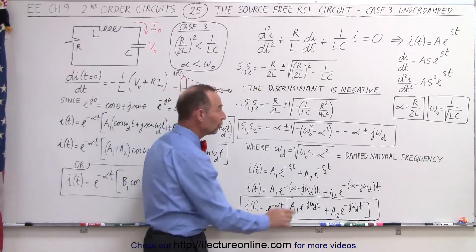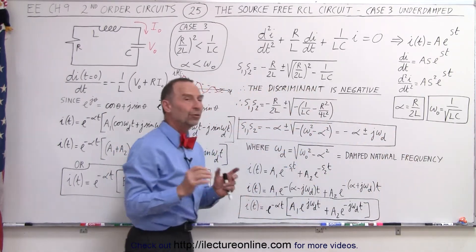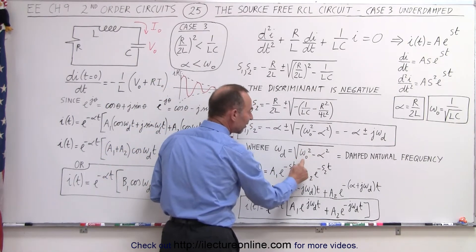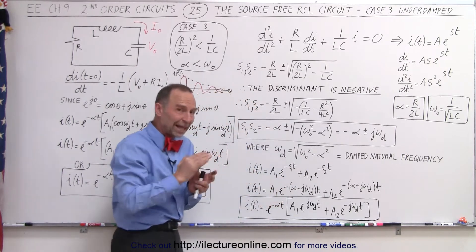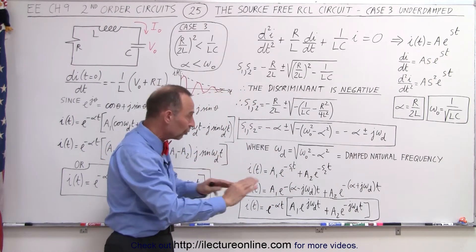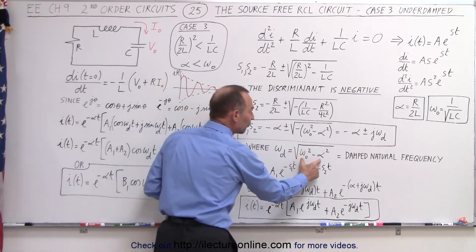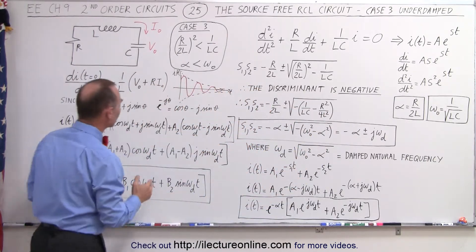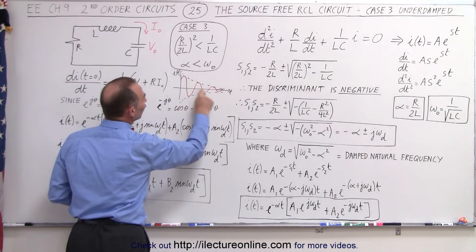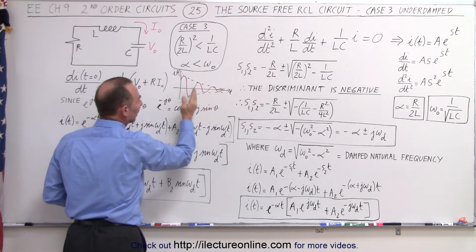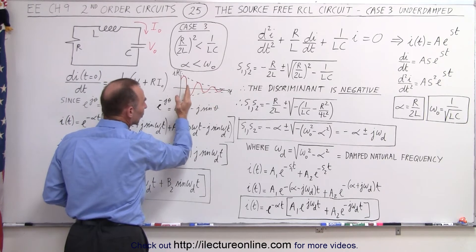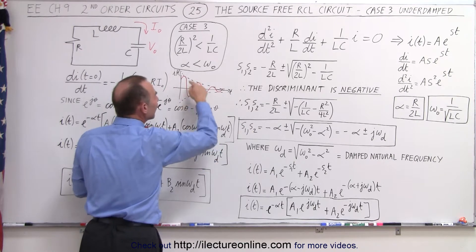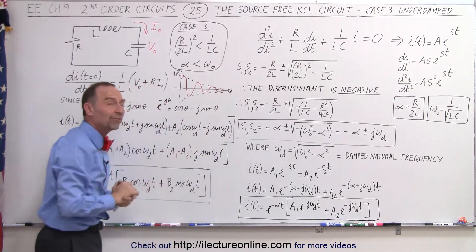That is called the damped natural frequency. Notice that the damped natural frequency is always going to be less than ω₀, because ω₀ is the natural frequency when there's no resistor in the circuit. This is the frequency of oscillation of the current when there is a resistor in the circuit, which means the frequency is going to be smaller — spread out more, slower than the natural frequency if there were no damping at all.